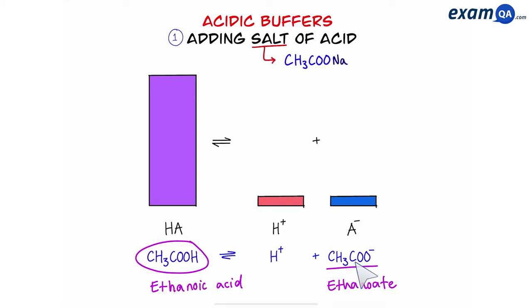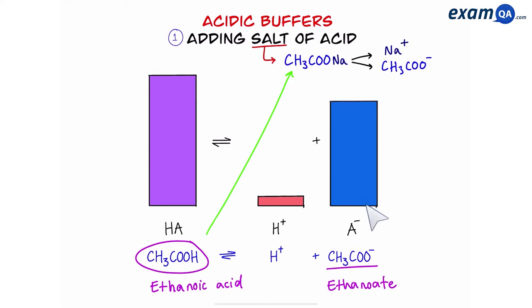So when adding the salt it can be any salt of ethanoic acid. For example sodium ethanoate. So we're going to be using the salt sodium ethanoate. The reason we're using sodium ethanoate is because it's a salt of ethanoic acid. That means this will break down into sodium ions and ethanoate. And of course the ethanoate ions will add to the current A- giving us this abnormal proportion which is basically a buffer.